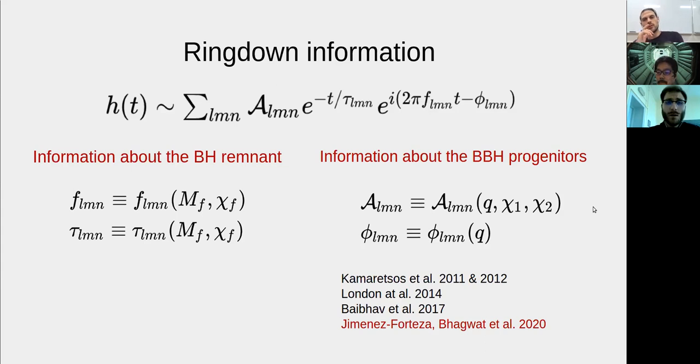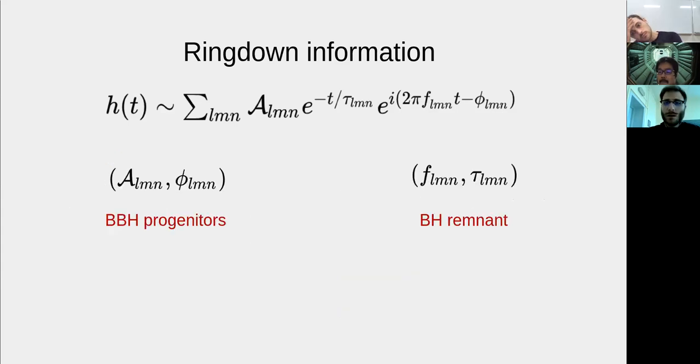This has been shown in many ways through the years, starting with work by Kamaretsos and following. In particular, we used these fits that have been obtained by Shweta and collaborators last year. So now you can already see why you can do a consistency test with ringdown using this fact. You have information about the progenitors through the amplitude and phases, but you also have information about the remnant. Since GR is a deterministic theory, these two pieces of information that you can extract from the waveform cannot be uncorrelated. You must have a relation that maps the information about the progenitors into the information about the remnant in the ringdown, even without considering the inspiral.